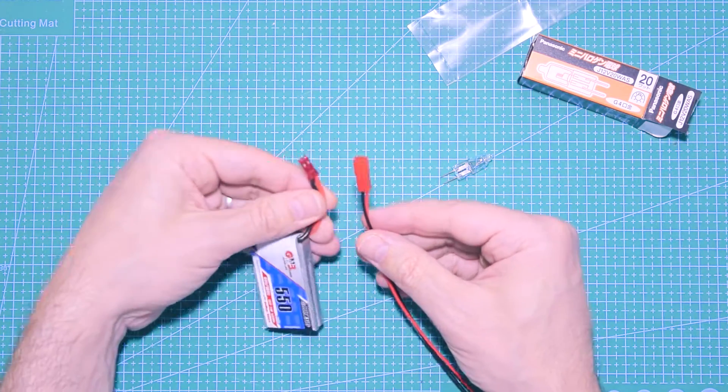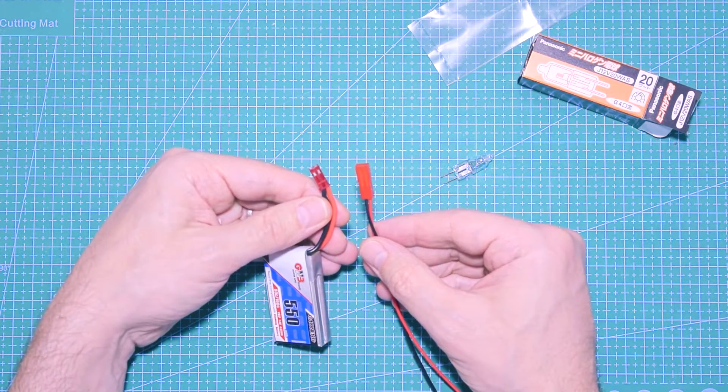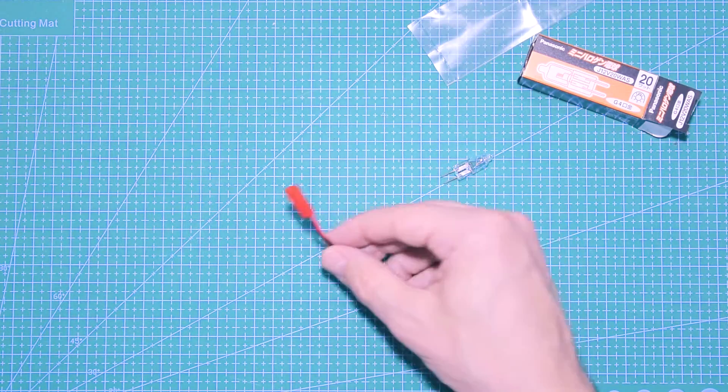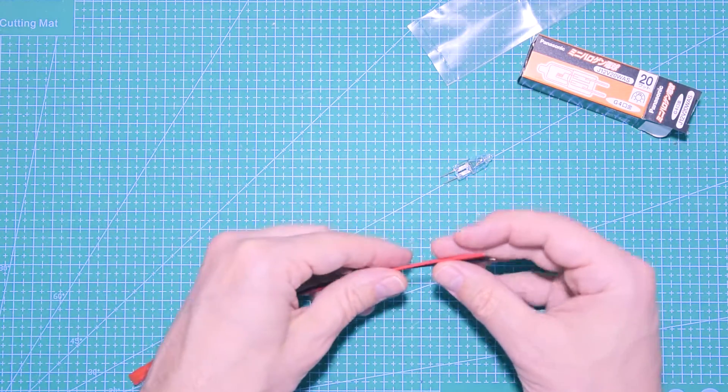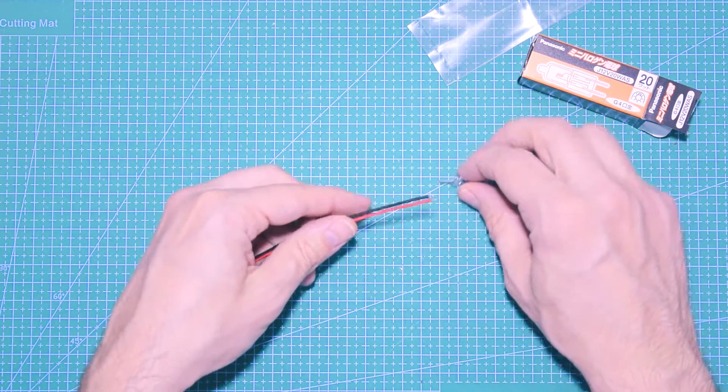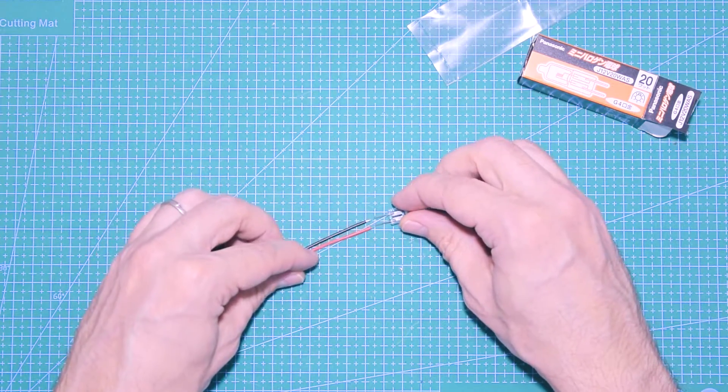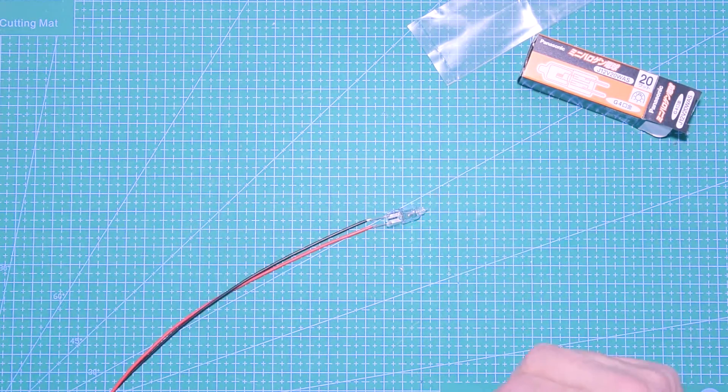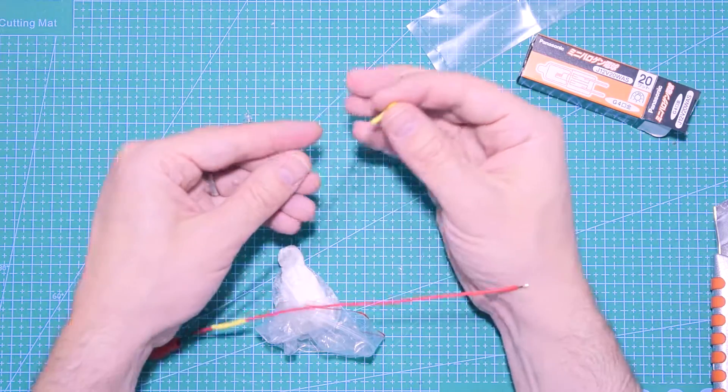This battery has a GST connector, so if you have a different battery you're just going to use your connector such as XT60 or something. I'm gonna solder this wire.